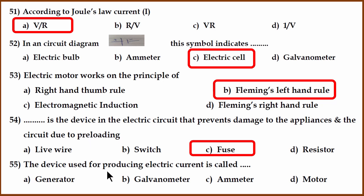So 55th question. Which device is used to produce electric current? The correct answer is generator. Generator produces electric current. Galvanometer and ammeter measure the presence of charge or current or the actual amount of current, whereas motor converts electric current to mechanical energy.